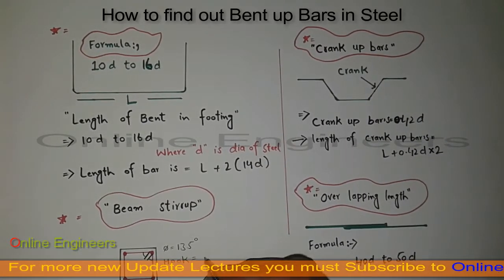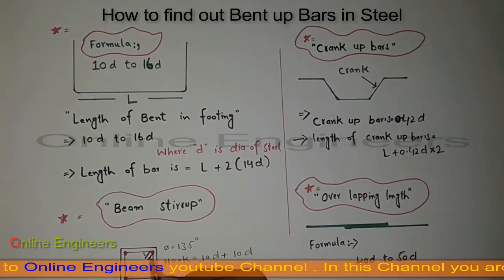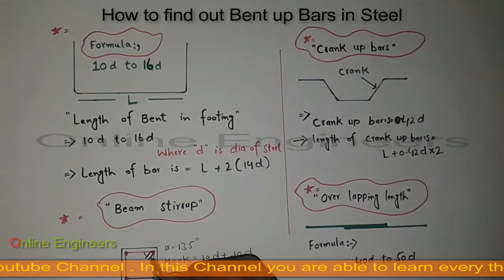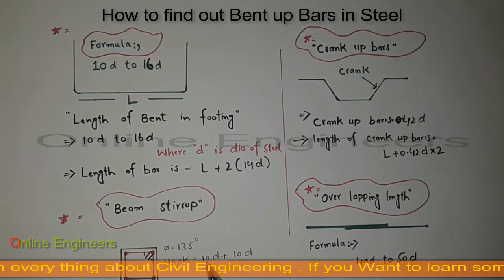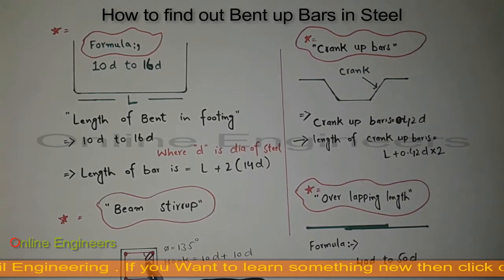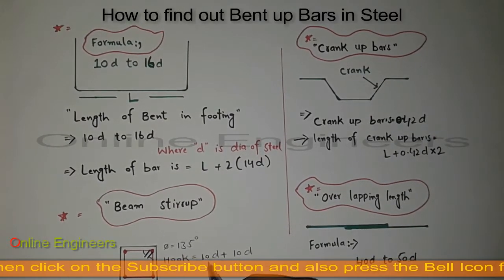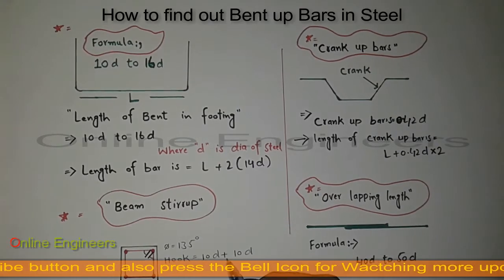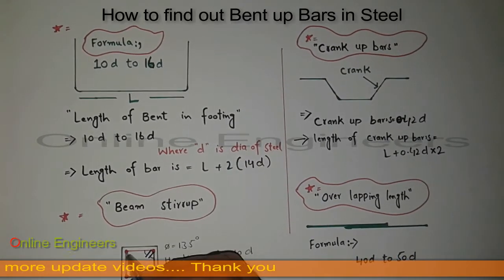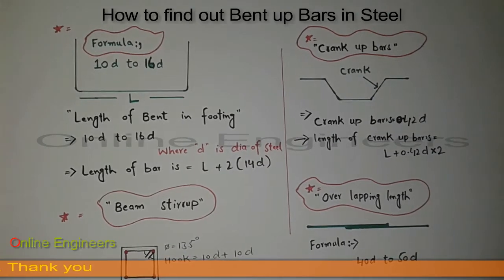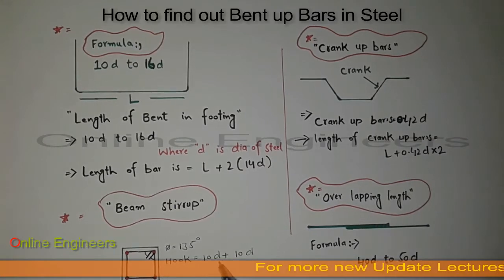The formula for the hook length is 10d plus 10d. This is one hook and this is another hook. When you want to find the length of the hooks, it is 10d plus 10d — because there are two hooks. Here d is the diameter of this stirrup and 10 is the constant. So you can find out the hooks in beam by this formula.